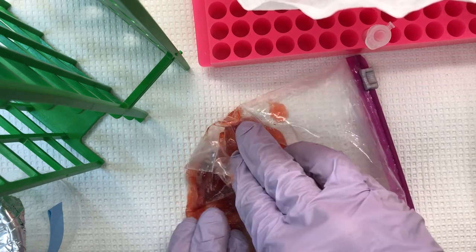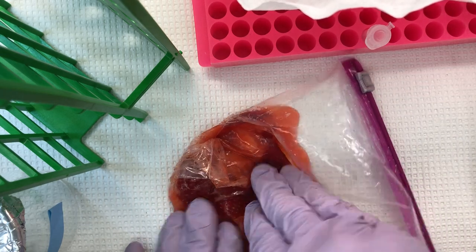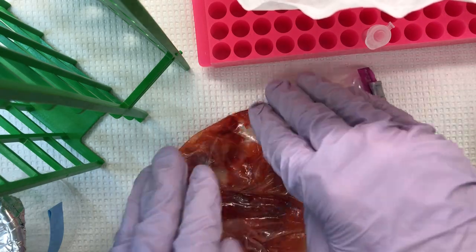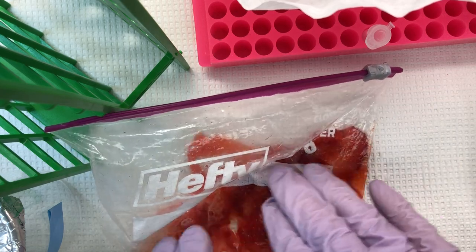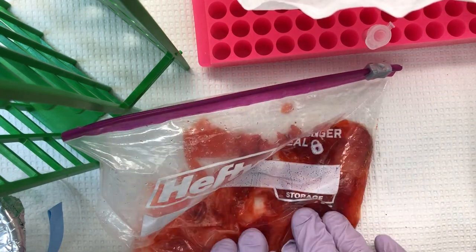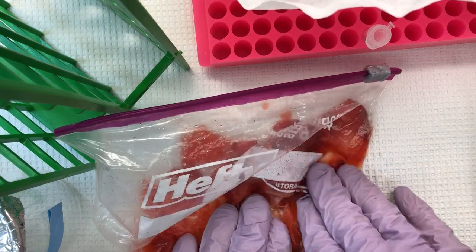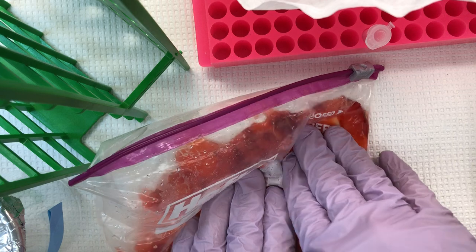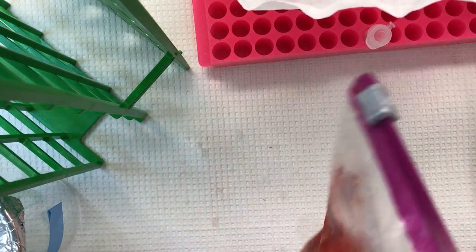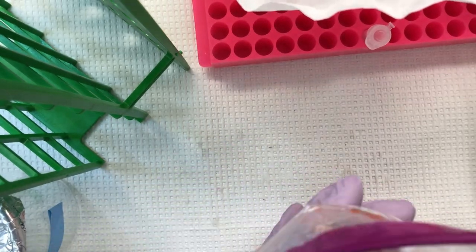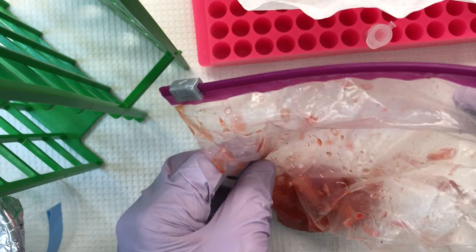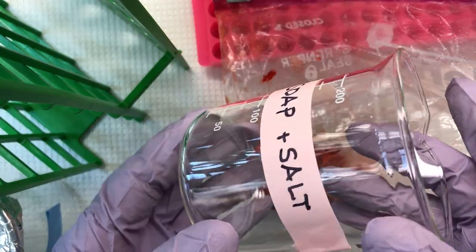Now I'm mushing up the strawberry, trying to break open the cells to release the DNA. Making a lot of juice. This is really fun. Hopefully the Ziploc bag won't leak. We'll crush all of this pulp, juice, in one corner of the bag and let it sit while we prepare the soap and salt solution.